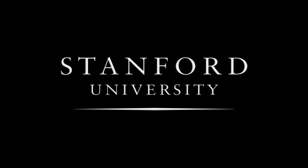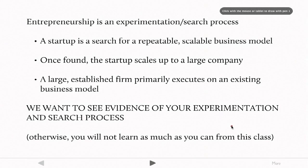Stanford University. In this video I'm going to talk about the opportunity assessment project and your weekly updates. First, entrepreneurship is fundamentally an experimentation and search process. A startup is essentially an organization that searches for a repeatable, scalable business model. Once this is found, the startup scales up into a large organization, while an established company is primarily executing on an already known business model.